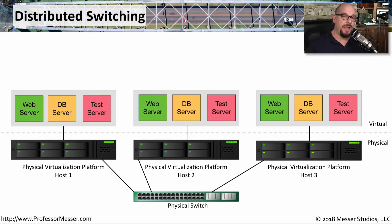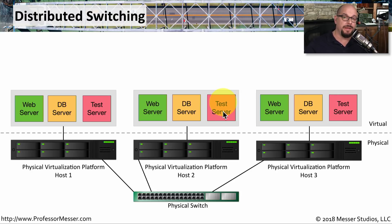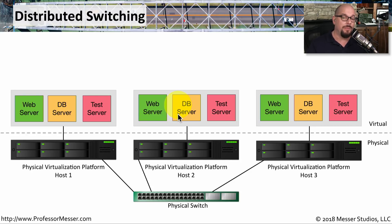Some of the challenges with supporting a network in this environment is that we may want to separate these devices into their own VLANs. For example, the test server should probably always be on a separate VLAN from the production web server and database server. We also have the challenge that any virtual device may move anywhere on the network at any time due to capacity needs, and when that happens we need to make sure that IP addressing, firewalls, and all other infrastructure components move and properly allow access along with that server.